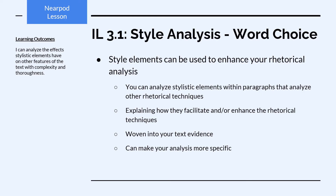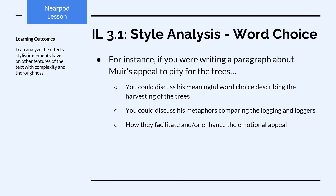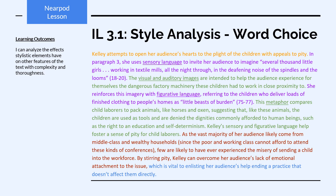So why are we learning about style and style analysis? Style elements can be used to enhance your rhetorical analysis. You can analyze stylistic elements within paragraphs that analyze broader rhetorical techniques by explaining how these stylistic elements facilitate and/or enhance the rhetorical techniques. You usually weave stylistic elements into your text evidence, which can make that evidence more specific. For instance, if you are writing a paragraph about Muir's appeal to pity for the trees, you could discuss his meaningful word choice describing the harvesting of the trees and his metaphors comparing the logging and loggers to various things, showing how all of this facilitates and/or enhances the emotional appeal he's going for.